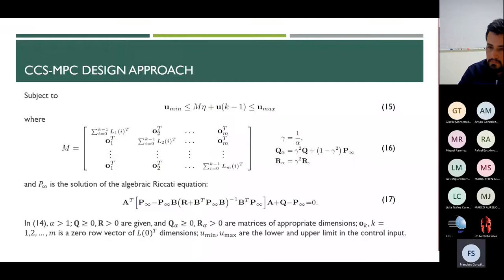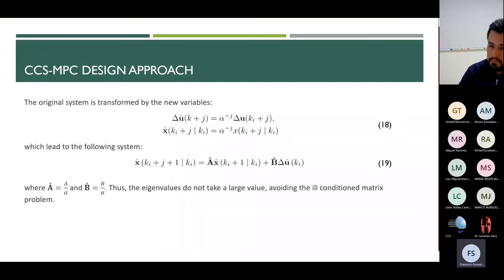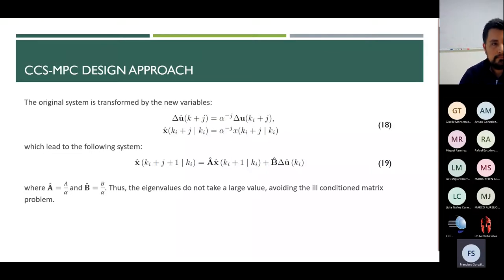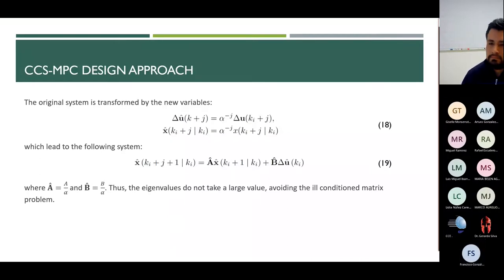It can be seen in the exponential cost function shown in Equation 14 that the state variables and the control input are each associated with a respective exponential factor alpha. The original system is transformed by the new variables in Equation 18, which leads to the system in Equation 19. Hence the matrices of the augmented model become A-hat and B-hat.